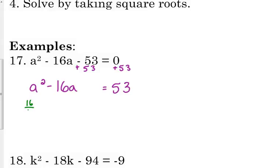So we've got 16 divided by 2 is 8. 8 squared is 64. Not only am I going to put that on the left side to complete the square, I can't change my equation. So if I add 64 to the left side, then to prevent from changing my equation, I have to add 64 to the right side as well.